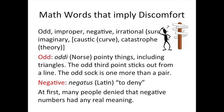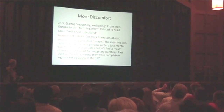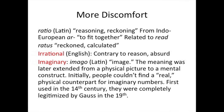And negative — odd and negative come from uncomfortable roots. Negative means deny. Odd means uneven. More discomfort words: irrational is contrary to reason. Imaginary — originally a real picture, then a picture in your mind. Ratio is reasoning and reckoning.